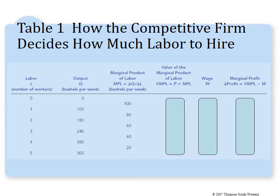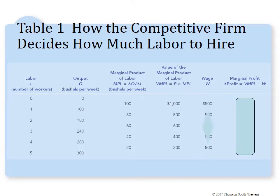VMPL is simply the price of the good times the marginal product. If the price of the good is $10, VMPL would be 10×100=$1,000; 10×80=$800; 10×60=$600, and so on. Wage is going to be constant — workers in competitive industries can't unilaterally demand a different wage. Here the wage is $500, and marginal profit is VMPL minus wage: $1,000−$500=$500; $800−$500=$300, and so forth.